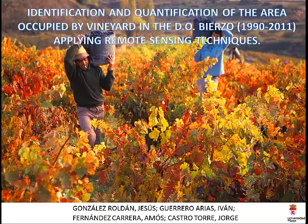This video will deal with identification and quantification of the area occupied by vineyard in El Bierzo from 1990 to 2011, applying remote sensing techniques. Due to the economical importance of the vineyard in the area of El Bierzo, and since it is the 20th anniversary of the start of the Designation of Origin Bierzo, it is convenient to evaluate, quantify and determine the change of the crop to give us an idea of its evolution in the future.